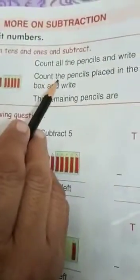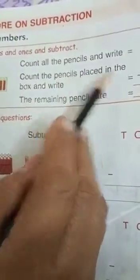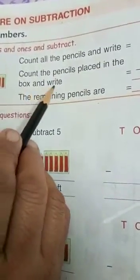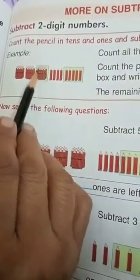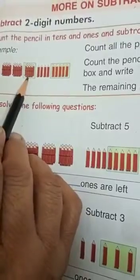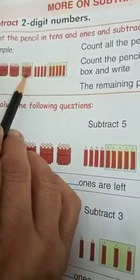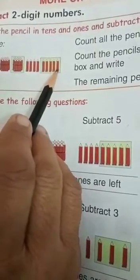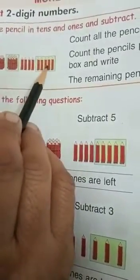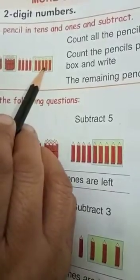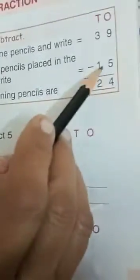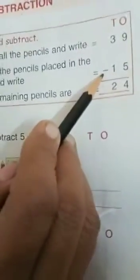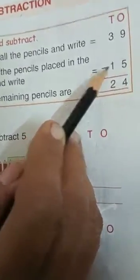Now count the pencils placed in the box and write. There are two boxes. Counting gives 1 ten and 5 ones. 1 ten and 5 ones means 10 plus 5 equals 15. And 15 is written here. Now this is the subtraction sign — you have to subtract 15 from 39.